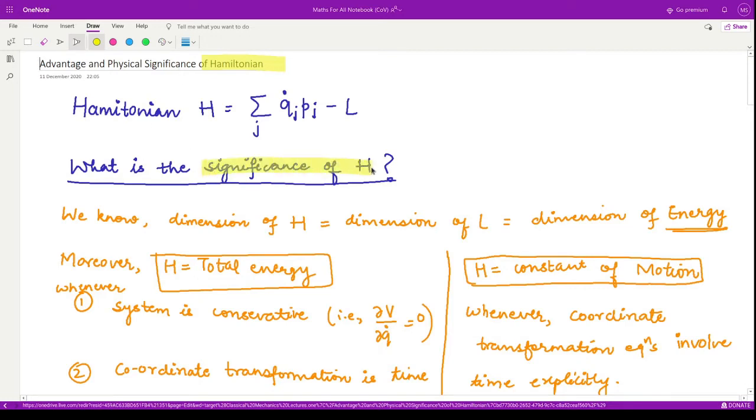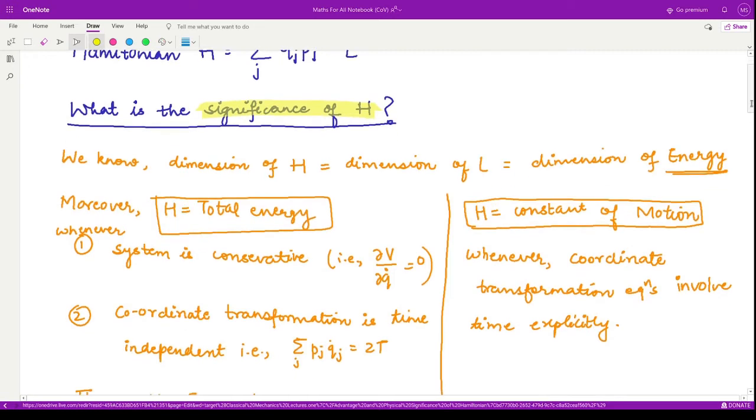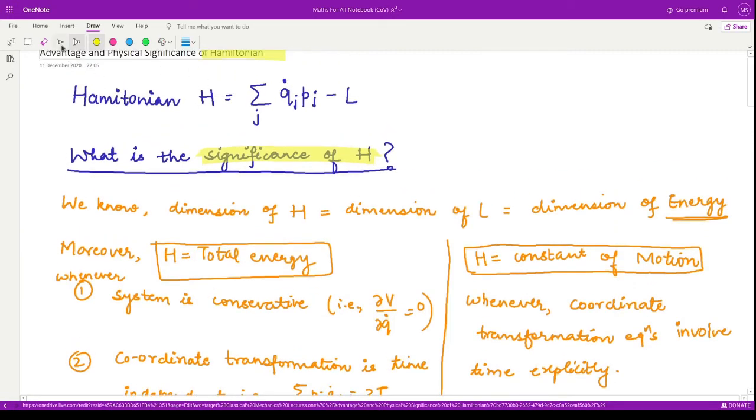In this video, let us see what is the advantage and what is the significance of using this approach. So first of all, let us see what does this Hamiltonian operator define using the equation summation qj dot pj minus L, where j varies from 1 to n.